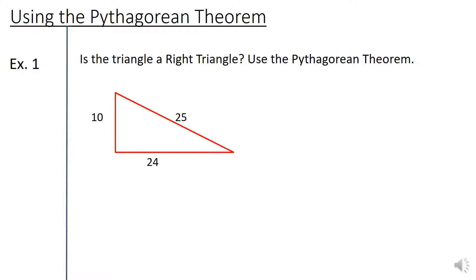Instead of being told it's a right triangle and given two of the sides to find the third side, we're actually given all three sides of the triangle and trying to use the Pythagorean Theorem to decide if it really is a right triangle. Does it really have a 90 degree right angle there?